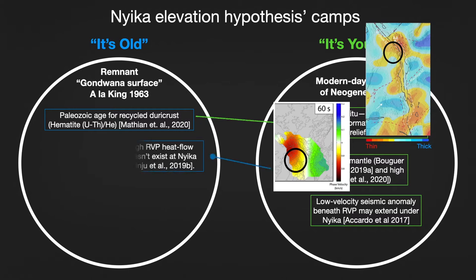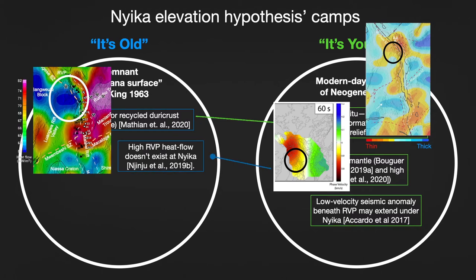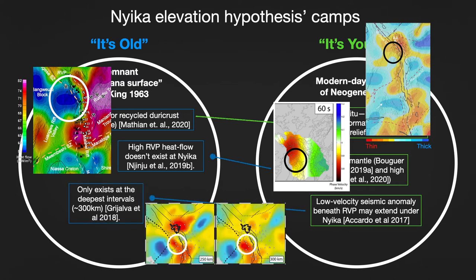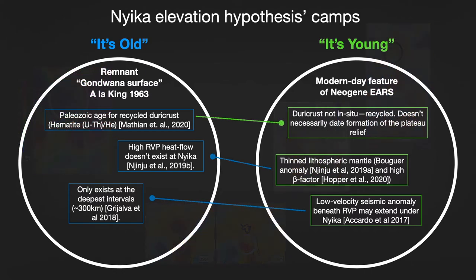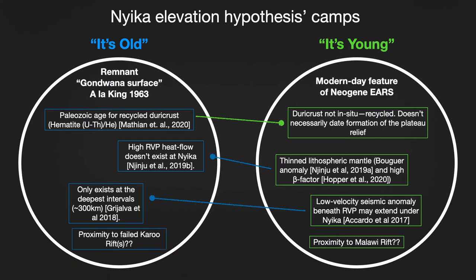However, Nyika's heat flow does not support this, and the seismic anomaly only appears to be in the deepest sections. So whatever Nyika lacks in lithosphere, it seems to make up for in its crust. But its proximity to the Malawi Rift has to count for something — though by that same token, its proximity to failed previous rifts should also count.